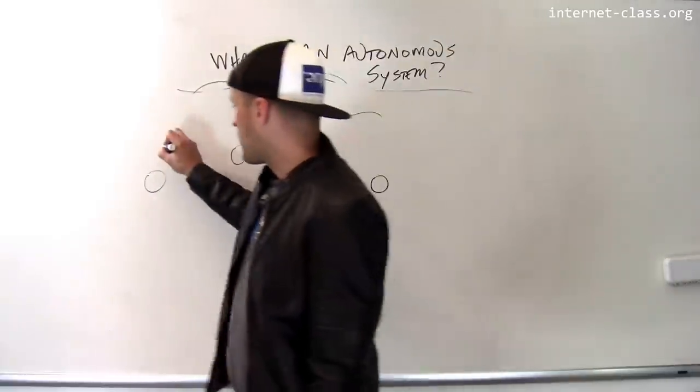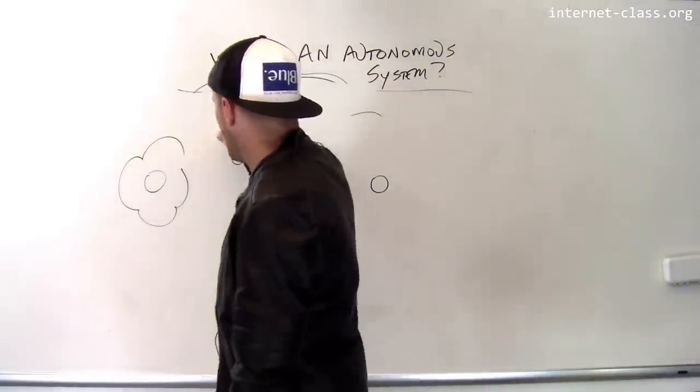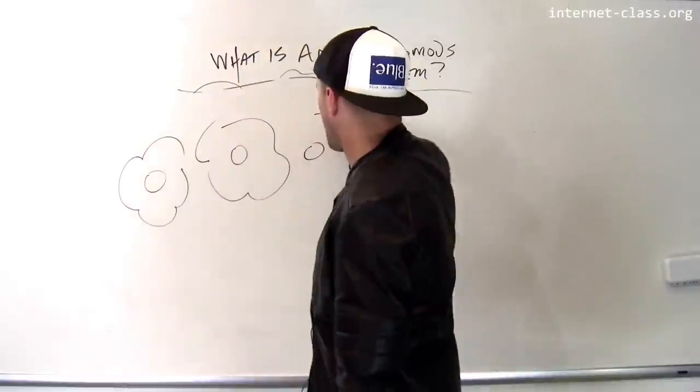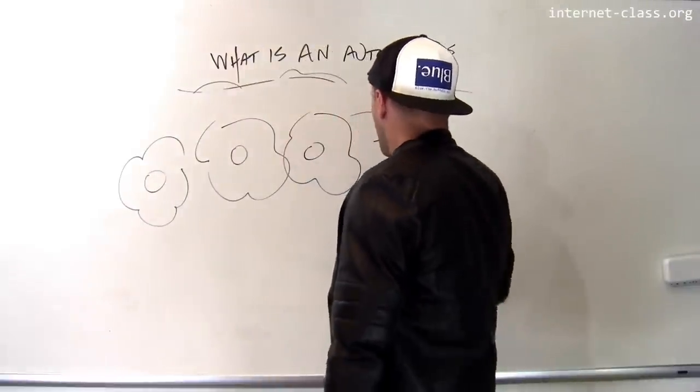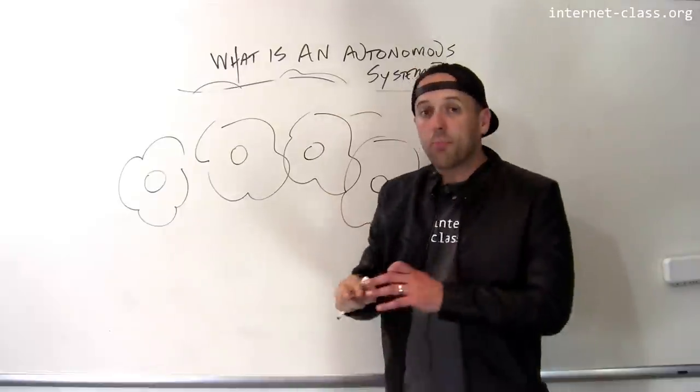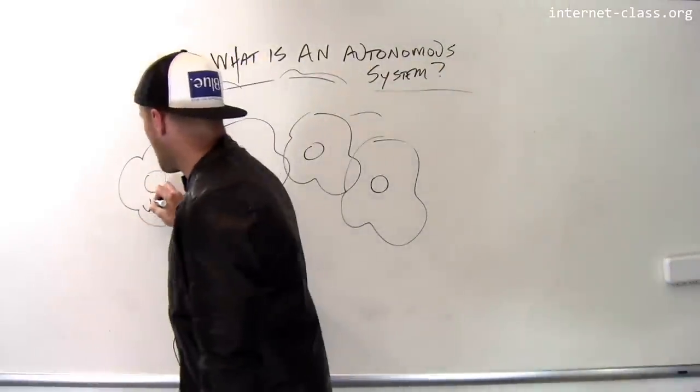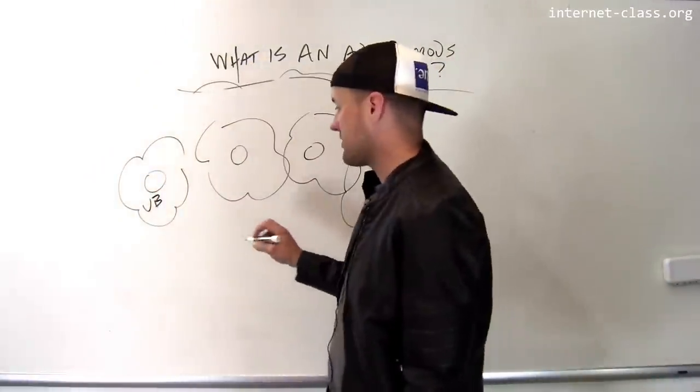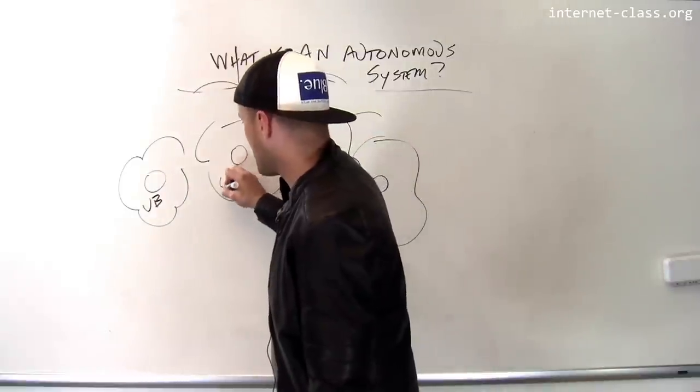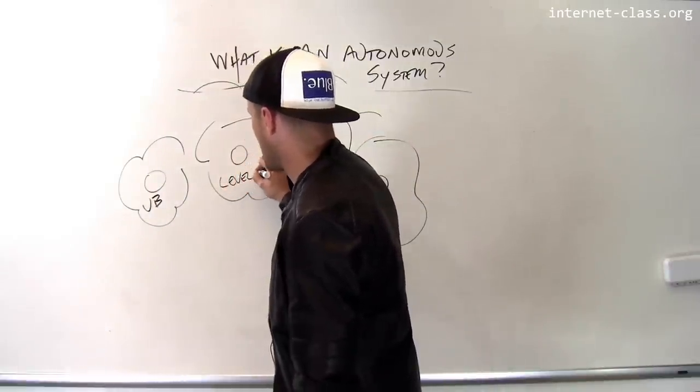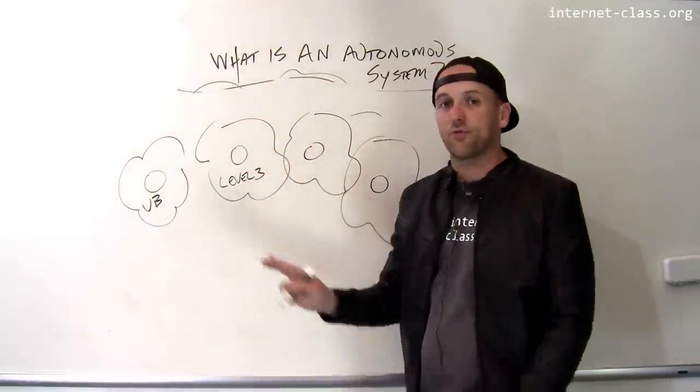So let's talk about that. Rather than looking at these nodes, let's reflect each one of these nodes as a computer network. Now those computer networks are operated by different entities. This one might be the computer network that's operated here at the University of Buffalo. This might be something like a computer network operated by a big ISP, like Level Three.